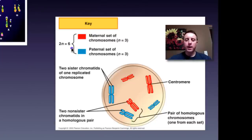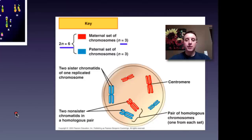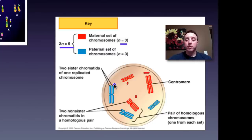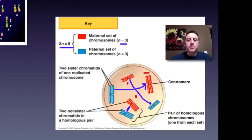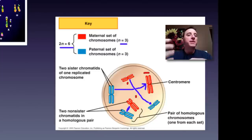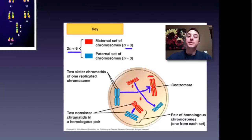Here we have a cell where 2N is 6, so N would equal 3. There are 3 maternal chromosomes — they come from mom — and 3 from dad, which match up as homologous pairs of about the same size, meaning they have the same genes on them. Just keep those terms in mind: homologous chromosomes pair up, one from mom and one from dad. Sister chromatids, on the other hand, are exact copies of each other and are formed within a single cell during DNA replication.